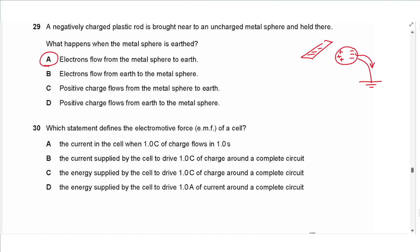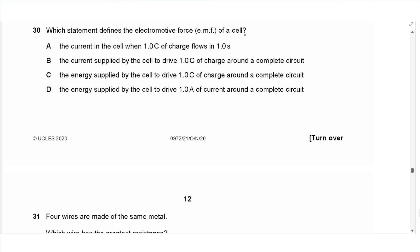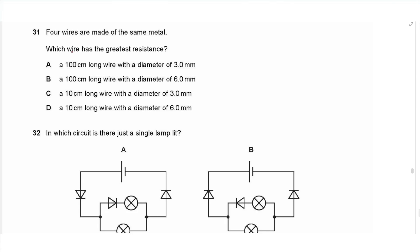Question 30 says: which statement defines the electromotive force of a cell? It is not the current. It is the energy supplied by the cell to drive one coulomb of charge around the complete circuit — yes. So the answer is C. Note: it is one coulomb of charge, not one ampere.